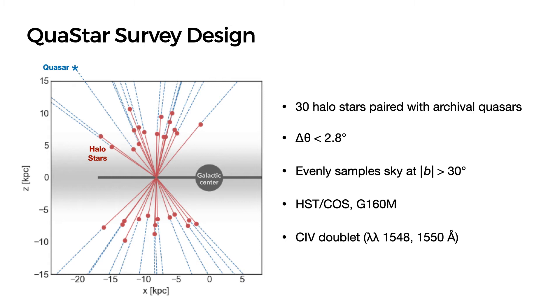In this figure, the red points represent the locations of the halostars, and the blue dashed lines extending beyond those points are the paired quasar sightlines at small angular separation. These sightline pairs evenly sample the sky at galactic latitudes above about 30 degrees. Both the archival quasars and the newly observed stars have HST-COS spectra, which allows us to measure carbon-4 column densities.